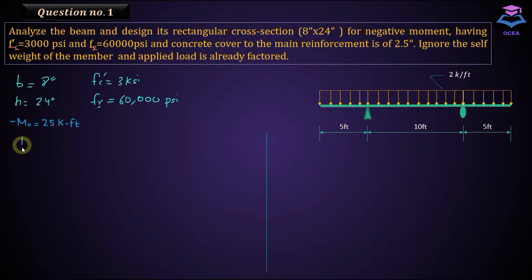First we need to calculate the effective depth D. If I make the cross-section here, B here, the width is equal to eight inches, and H, that is the overall height of the section is equal to 24 inches. Since we are designing for negative moment, the top fibers, the fibers above the neutral axis will be in tension, whereas the fibers below the neutral axis will be in compression. So we have to place the reinforcement here at the top side above the neutral axis.